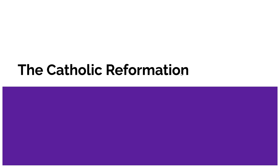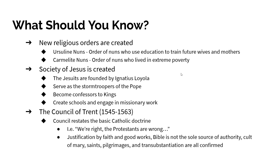Last but not least, we have the Catholic Reformation. The Catholics said they were right and everybody else was wrong. The Council of Trent meets from 1545 to 1563, where they analyze everything that has happened and restate basic Catholic doctrine: justification by faith and good works, the Bible is not the sole source of authority, the Pope can interpret the scriptures, and the cult of Mary, saints, pilgrimages, and transubstantiation are all confirmed. It's almost like the Catholics didn't learn anything.